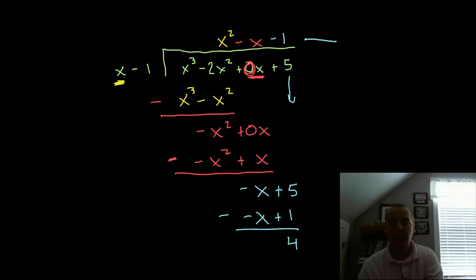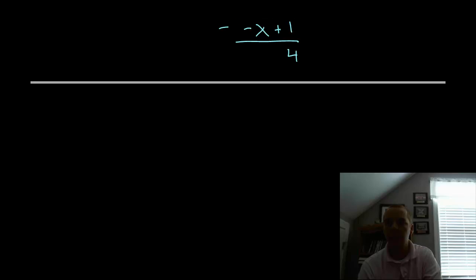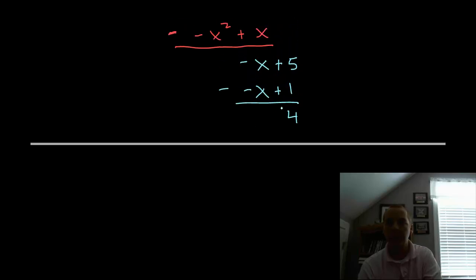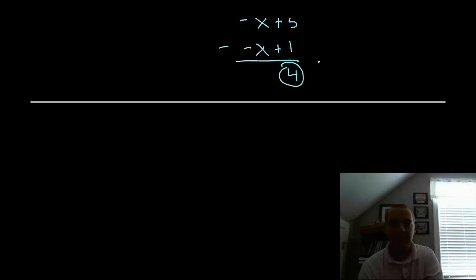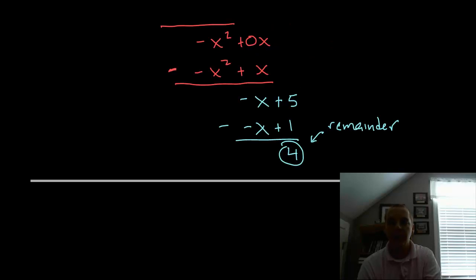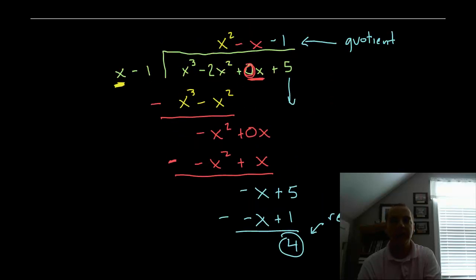Keeping with the same terminology, the result on top is called the quotient — x squared minus x minus 1 — and that 4 left over at the bottom is called the remainder.